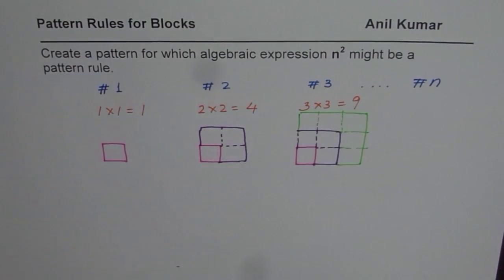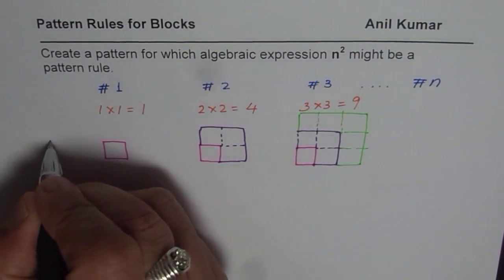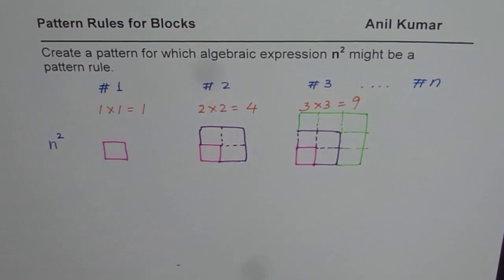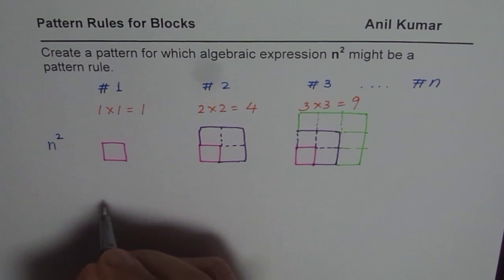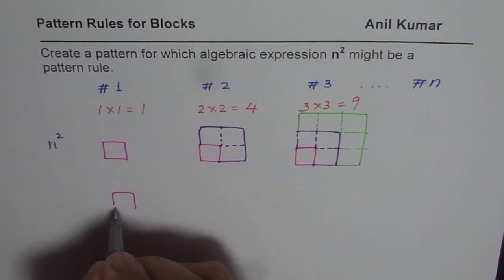So now here we have a pattern rule which is n². Can you think about some other way of creating figures in the form of a pattern, a sequence, where n² may be applied? Okay, let's think about it. Let's again start with 1 square. So I'll again start with 1 square.